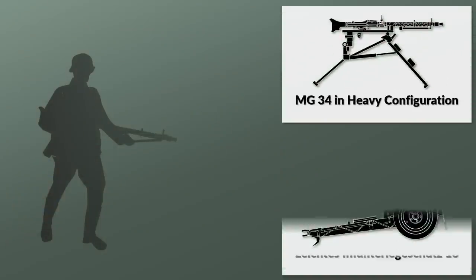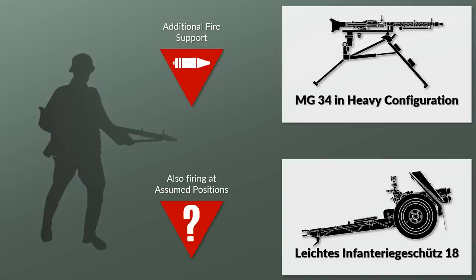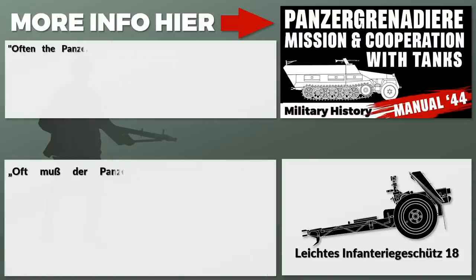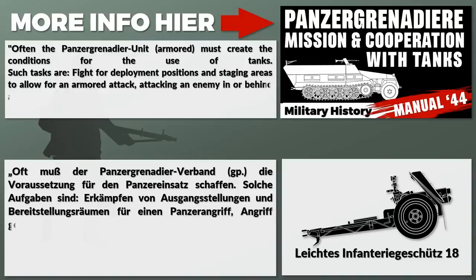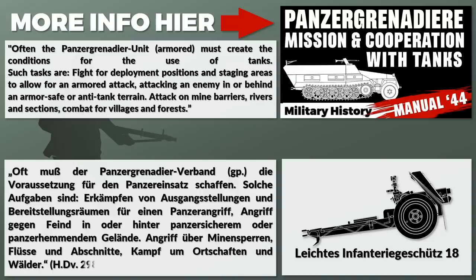The next branch is the infantry. It supports the tanks, especially with heavy machine guns and infantry support guns, providing additional firepower against enemy positions identified prior to or during the attack, as well as against assumed positions. Furthermore, sometimes the infantry must create the foundations for an attack. To cite from a late-war manual for Panzergrenadier units: the Panzergrenadier unit must often create the conditions for the use of tanks — fighting for deployment positions and staging areas, attacking an enemy in or behind anti-tank terrain, attacking mine barriers, rivers, and sections, and combat for villages and forests.